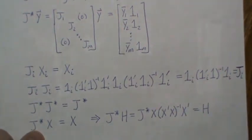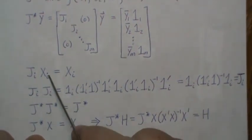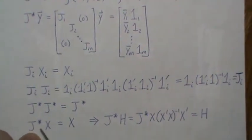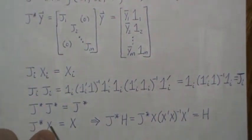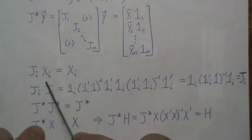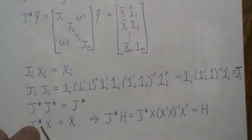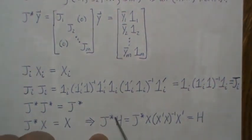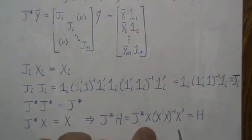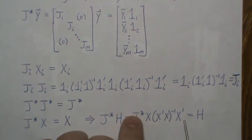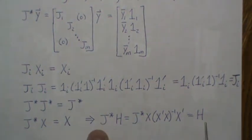Based on the block diagonal structure and J_i*X_i = X_i, we get J_star * X = X. This implies J_star * H = X*(X^T X)^{-1}*X^T = H, where H is the hat matrix. So J_star*H = H.